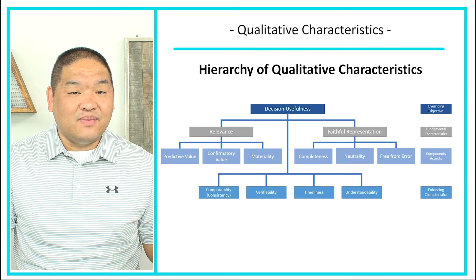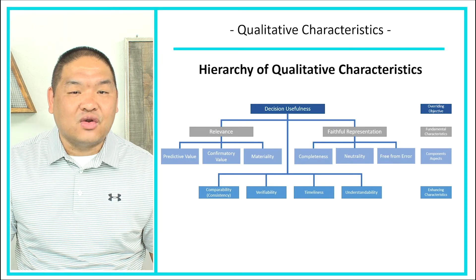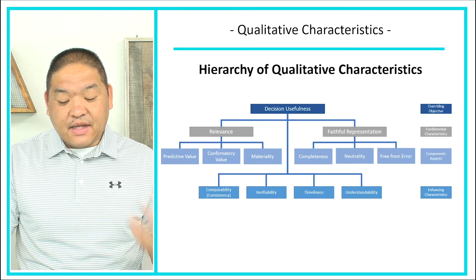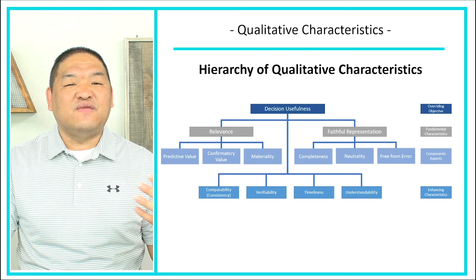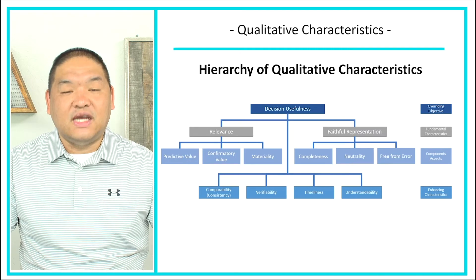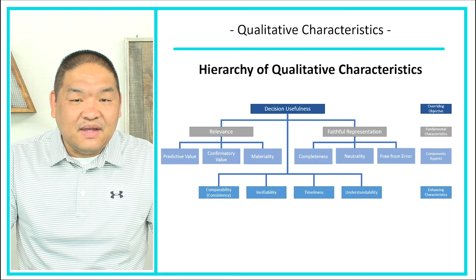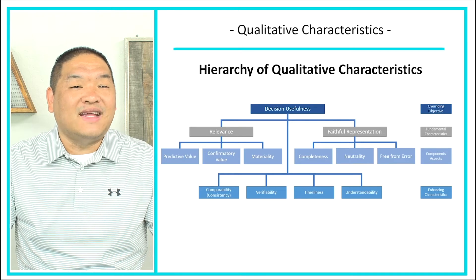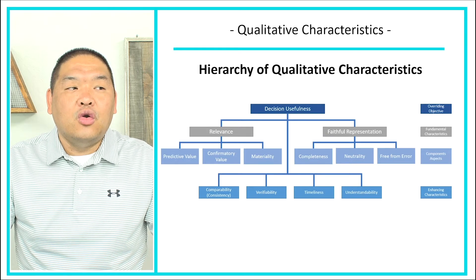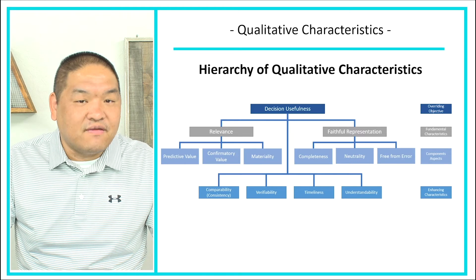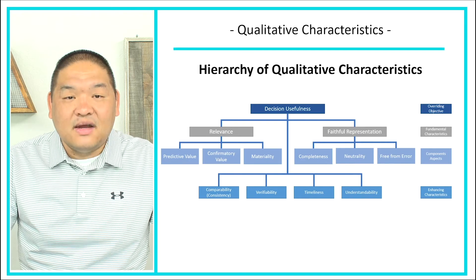Consistency means we can be consistent from one period to another, so we don't change how something is valued or reported on the financial statement. Another enhancing characteristic is verifiability — can someone else do it and get to the same or similar answer? Timeliness is also important; if something is not timely it becomes obsolete. And then understandability — can a regular person who has a minimum knowledge of business concepts understand your financial statement?